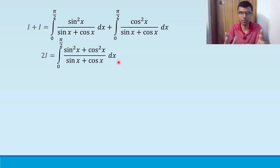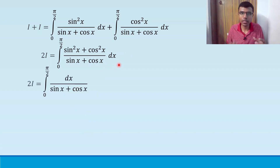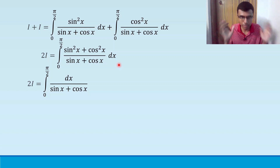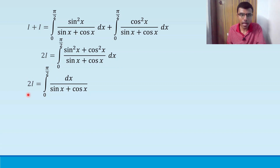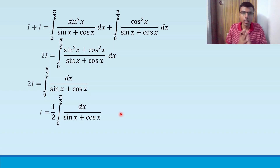So I get 2I = integral from 0 to π/2 of (sin²x + cos²x) / (sinx + cosx) dx. Now, sin²x + cos²x = 1, so the entire question simplifies and I is nothing but (1/2) integral from 0 to π/2 of dx / (sinx + cosx).